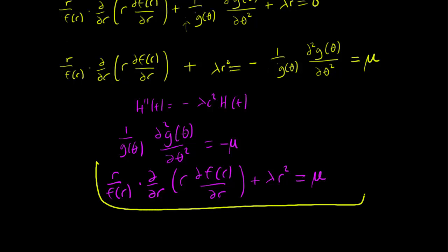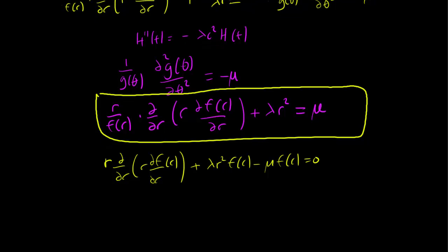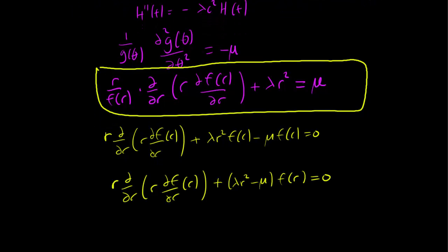Let's discuss this last equation a little more, since this is the first new equation we've encountered. Let's simplify by first multiplying both sides by f(r). We get (d/dr)(r df/dr) + (λr² - μ)f(r) = 0, which factors as shown.